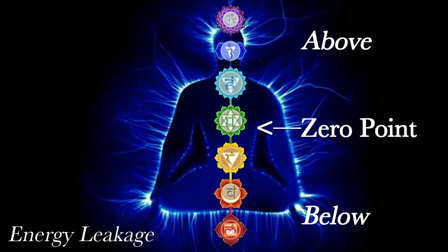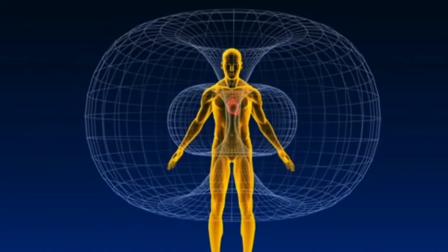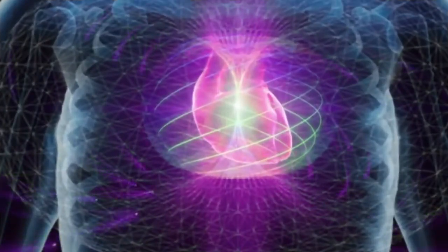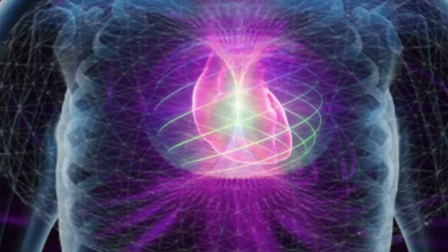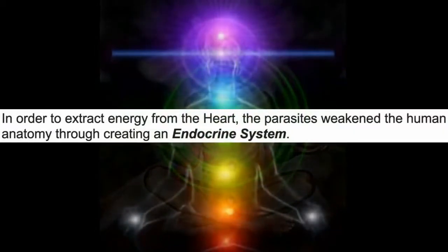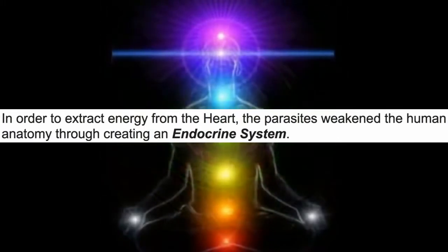So, the generator of everything is the zero point. That's the heart. If I am a parasite, I want to manipulate this system. I can't directly take anything from the heart, but I can create a labyrinth for the energy to flow through, which will guarantee that the energy won't fully return. In order to do this, the parasites needed to weaken our anatomy through creating an endocrine system.